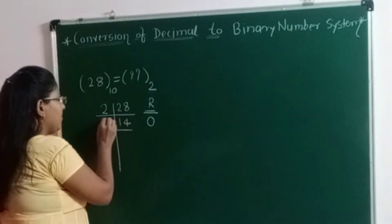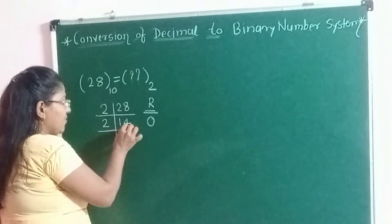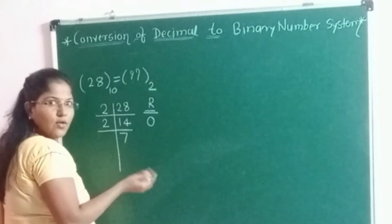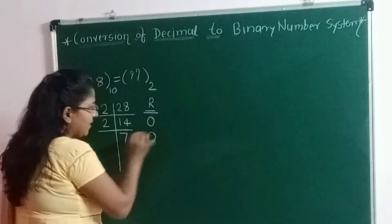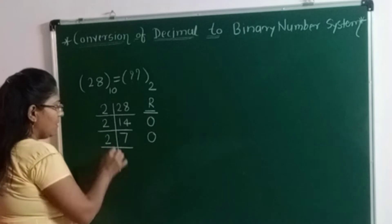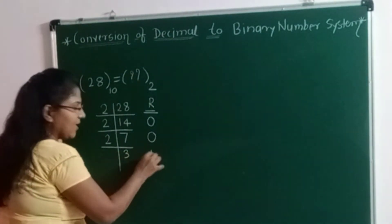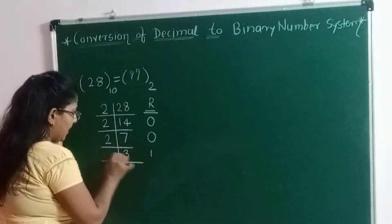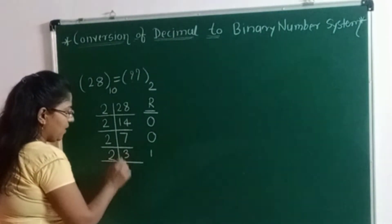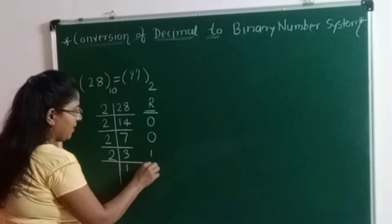Again divide 14 by 2 — the quotient is 7, and this number is completely divisible by 2, that is 2 into 7 equals 14, so no remainder; write the remainder as 0. Next, 2 into 3 equals 6, so 3 is the quotient and the remainder is 1. Again divide 3 by 2: 2 into 1 equals 2, so here write quotient 1 and then the remainder is 1.